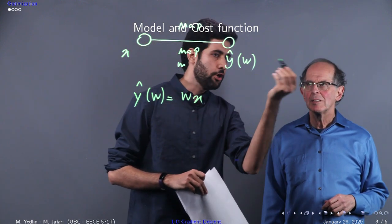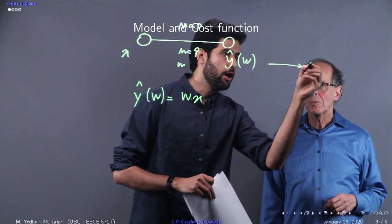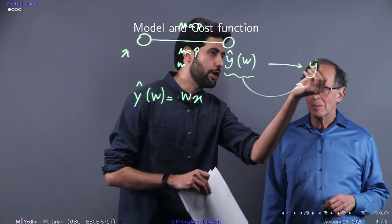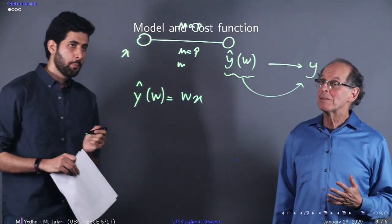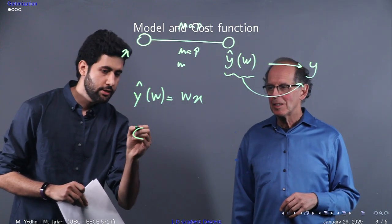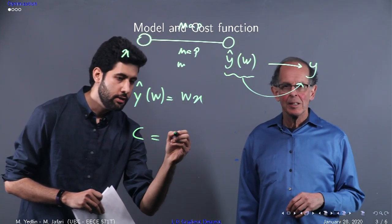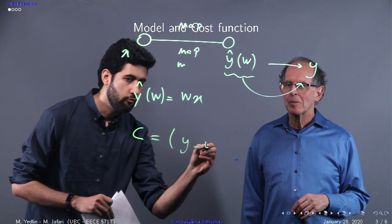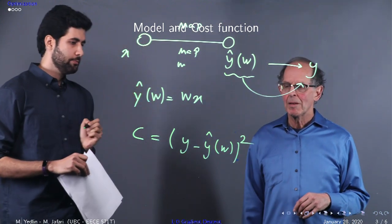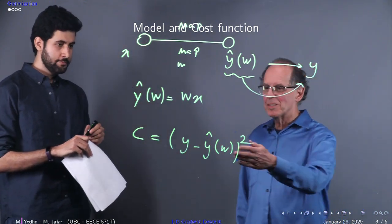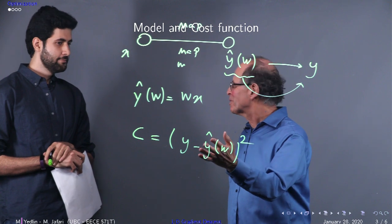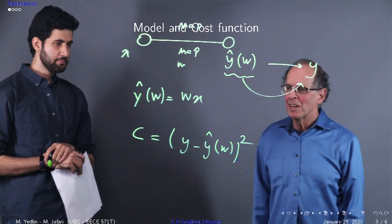We have a desired output which is y, so we want this prediction to be close to this ground truth or real value. We have some error between the prediction and the ground truth. The cost function would be (y minus y hat of w) squared. We want to reduce this as we get better estimates of w. If we were perfect, it should go to zero.